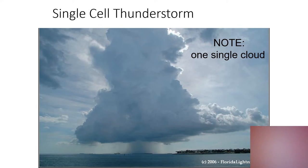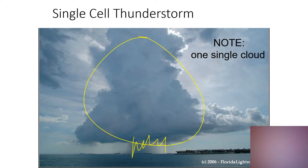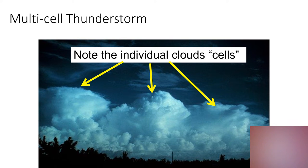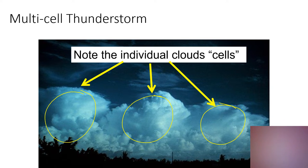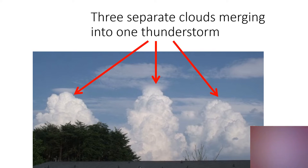A single-cell thunderstorm is where you have just one little cloud making a thunderstorm in one small place. You've seen this before — it can be raining in one spot and five miles down the road it's sunny, because the storm was caused by that one single cloud over that one little spot. A multi-cell thunderstorm is when you have three or more single cells that start to grow together. You can see three separate clouds getting close to one another, eventually merging to possibly form into a bigger single thunderstorm.